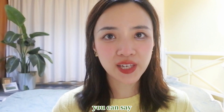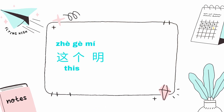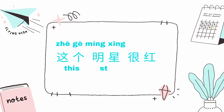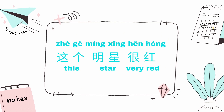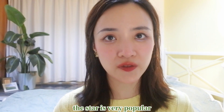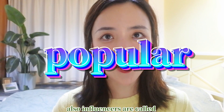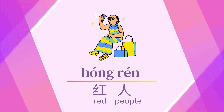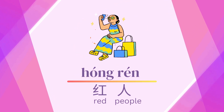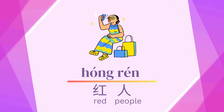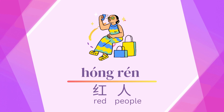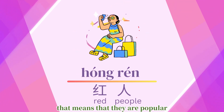So you can say 这个明星很红. This star is very red, but actually you mean this star is very popular. Also, influencers are called 红人 in Chinese, which means red people — that means they are popular.